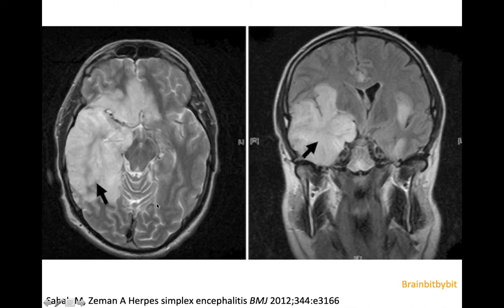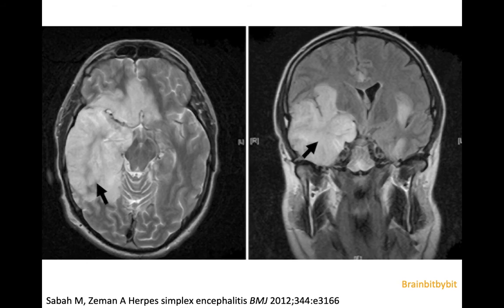This is a case where detection is not the problem — also herpes simplex encephalitis, with extensive abnormalities, edema and swelling in the mesial temporal lobe, and also the rest of the temporal lobe continuing into the cingulate and sub-insular region. Herpes encephalitis may show hemorrhage, which can be detected on gradient or susceptibility-weighted images, in contrast to limbic encephalitis. Besides the asymmetry, that's also something that might discriminate between the two.